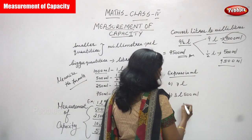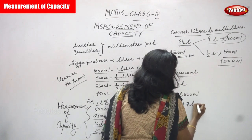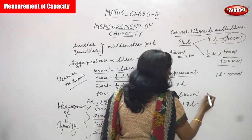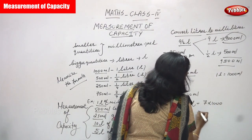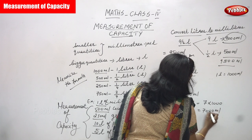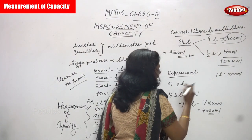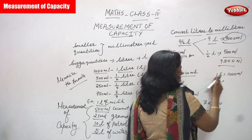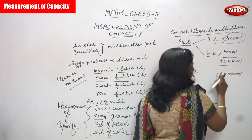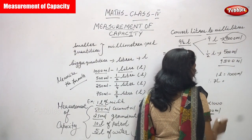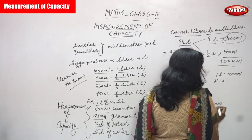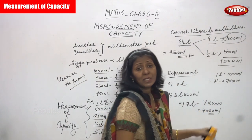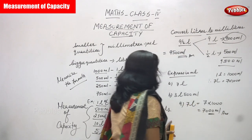Next, question A: convert seven liters into milliliters. We know one liter equals 1000 ml. So seven liters equals seven into 1000, which gives us 7000 ml. Therefore, seven liters is equal to 7000 milliliters.